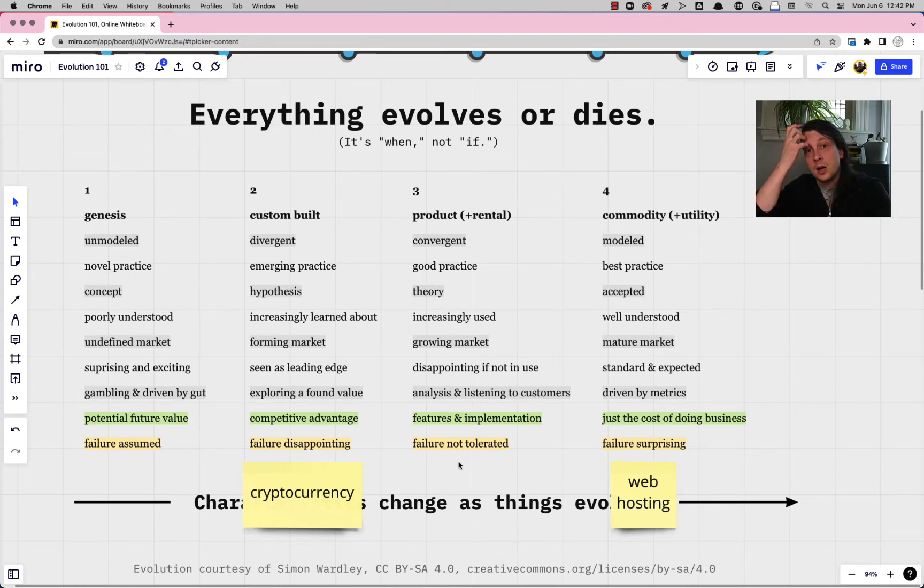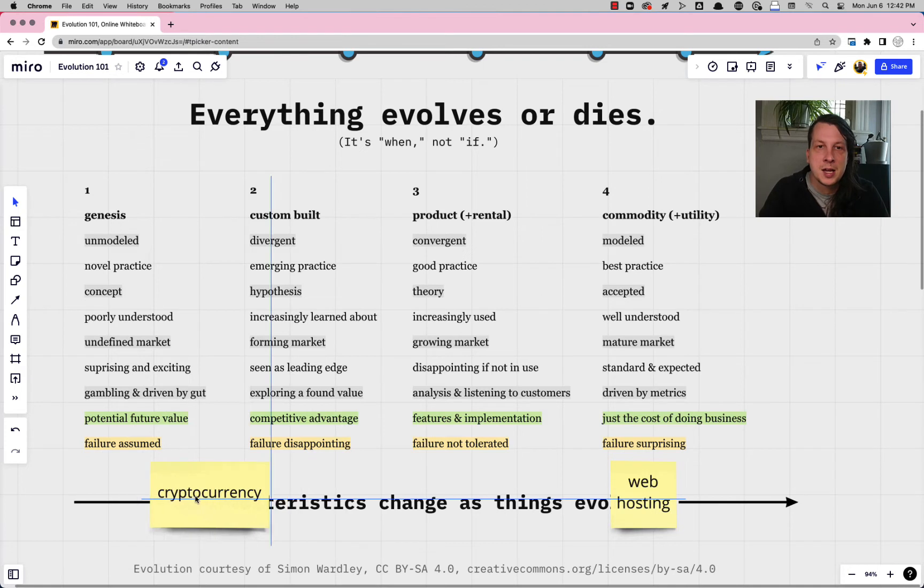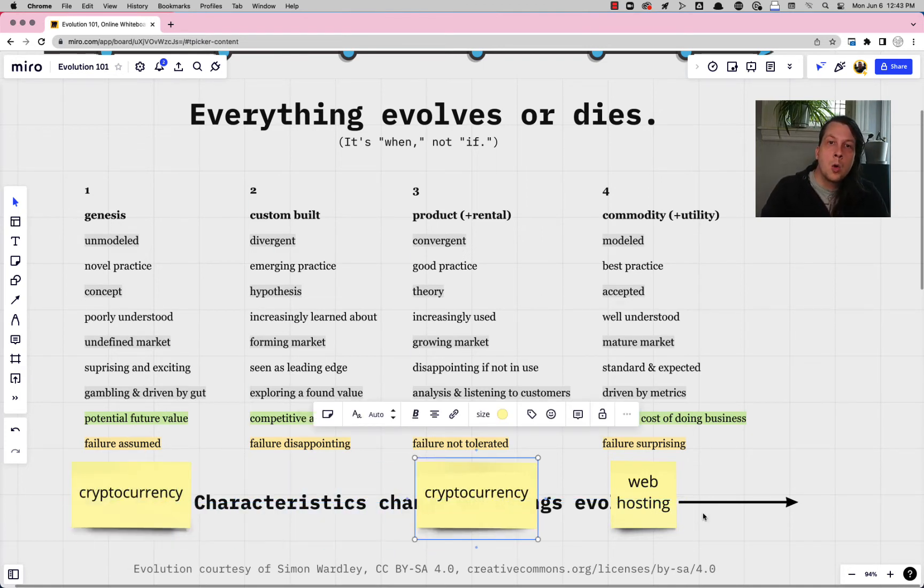Now the cool thing to do when you even do this basic kind of version where you just pick one characteristic and talk about it this way, is if you get multiple perspectives on something and you have some disagreement. Whereas one person let's say thinks cryptocurrency is in stage one and another person thinks it's in stage three or four.